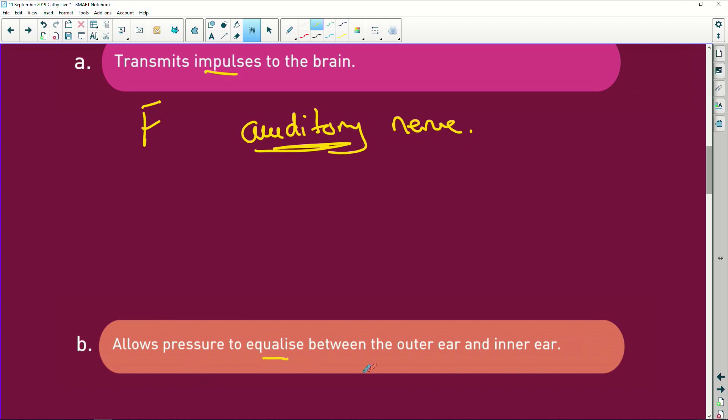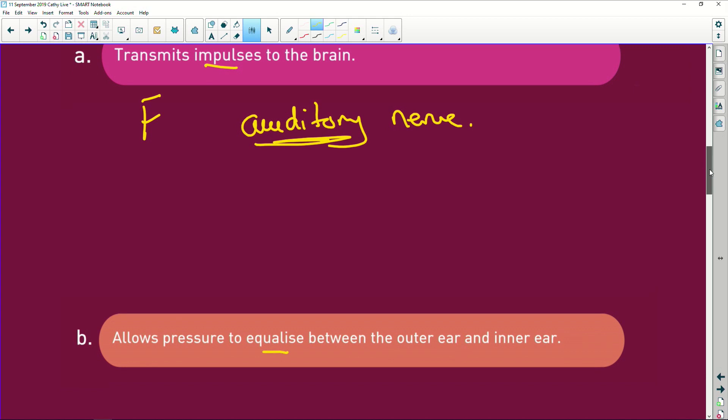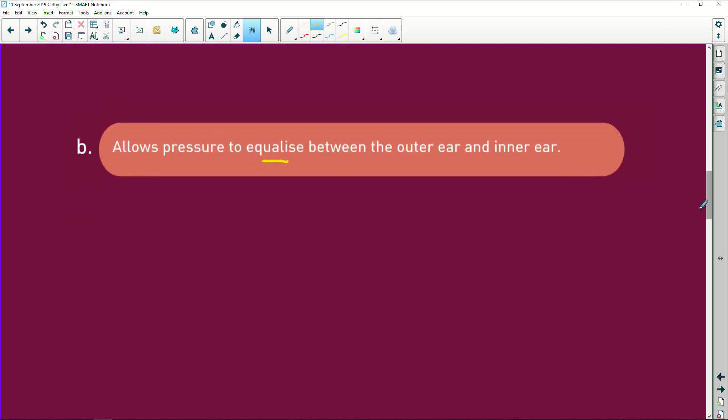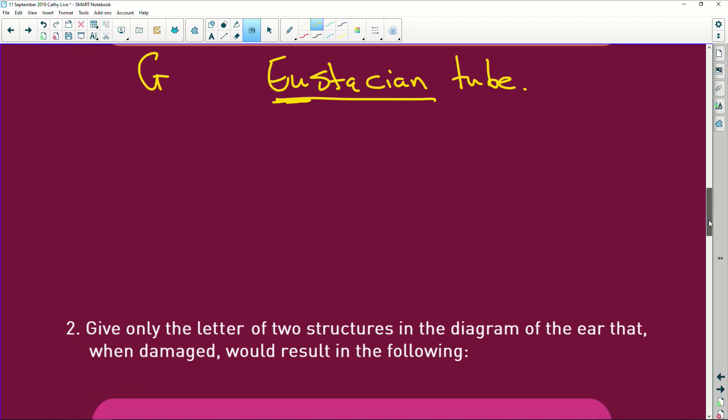Okay. Allows pressure to equalise between the outer and the middle ear. Well, that I can tell you is the eustachian tube. I can't remember what number, a G. Okay. So, it is G, and it is the eustachian tube. And I know you're laughing at me by the way I'm pronouncing this, but if you pronounce it the way I'm saying it, then you won't forget how to spell it. All right. The eustachian tube.